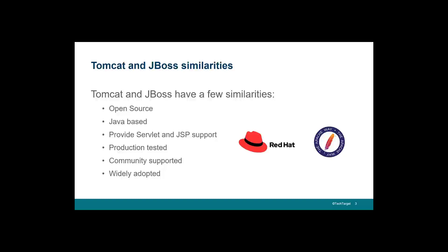There are a few similarities between the two. Tomcat is an application server — you can deploy WAR files to it and run web-based applications, so it qualifies as an application server, and so does JBoss. They both support different APIs, but both qualify. They're both open source, both Java-based, and they provide Servlet and JSP support. They're also production-tested and have been around forever — both products predate the millennium, going back to 1998 or 1999. So you're looking at 20 years of development and support. They are production-ready.